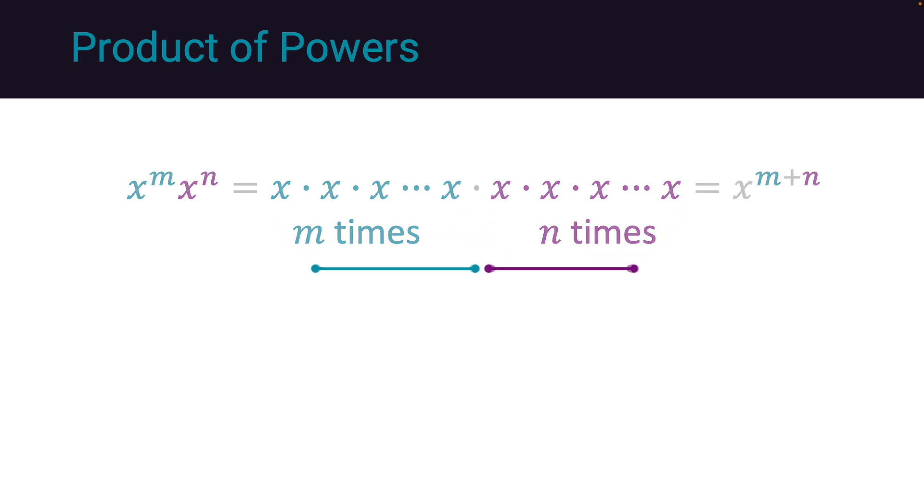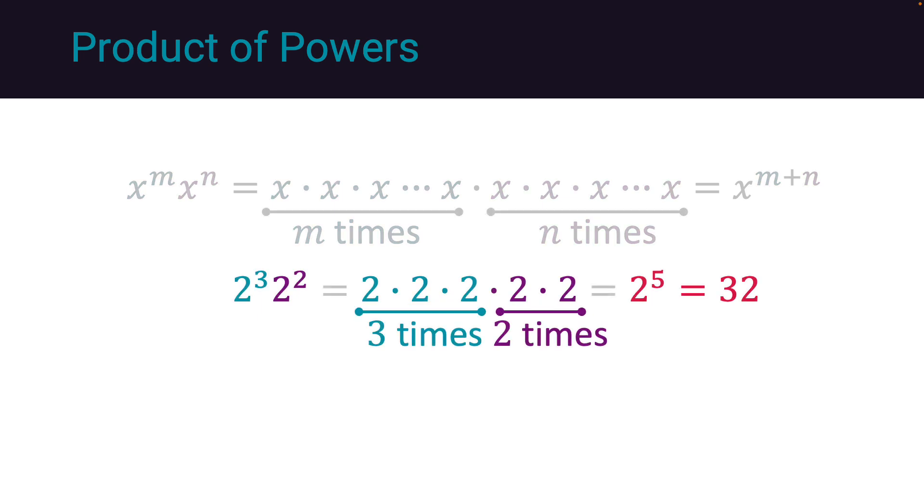As an example, we have 2 to the power of 3 times 2 to the power of 2, which gives us 5 2s multiplying, which is 2 to the power of 5. This equates 32.